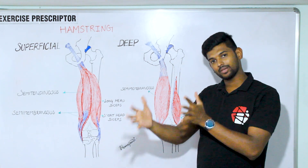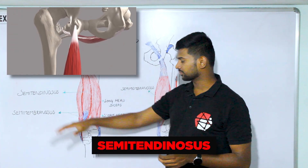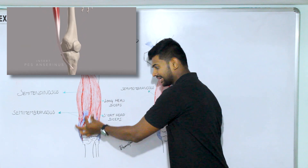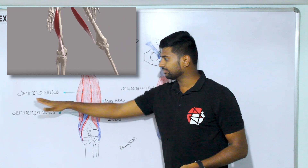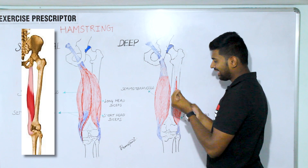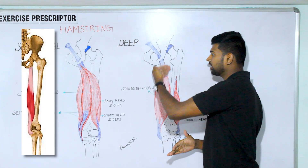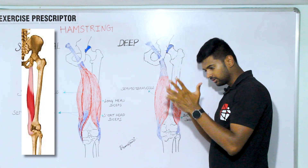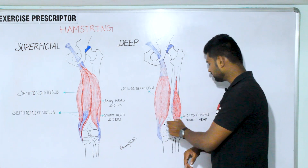This muscle is called biceps femoris. Semitendinosus means it has a distally longer tendon — a longer tendon portion distally — so this muscle is called semitendinosus. Semimembranosus has a proximally attached flattened, larger, membranous-like tendon attaching proximally, attaching in a membranous, flattened manner, so this muscle is called semimembranosus.